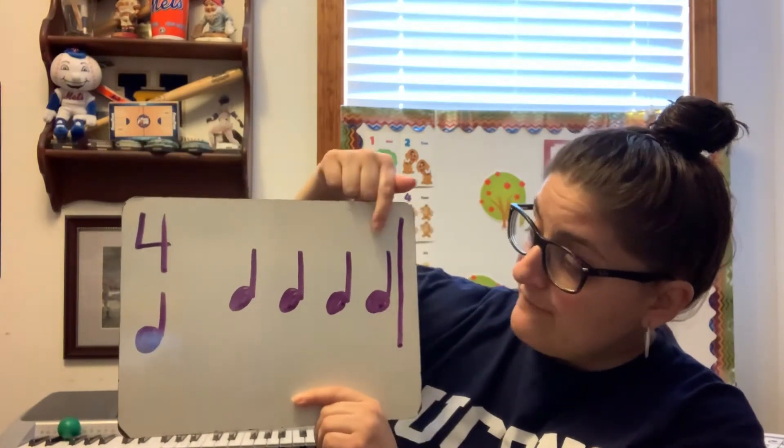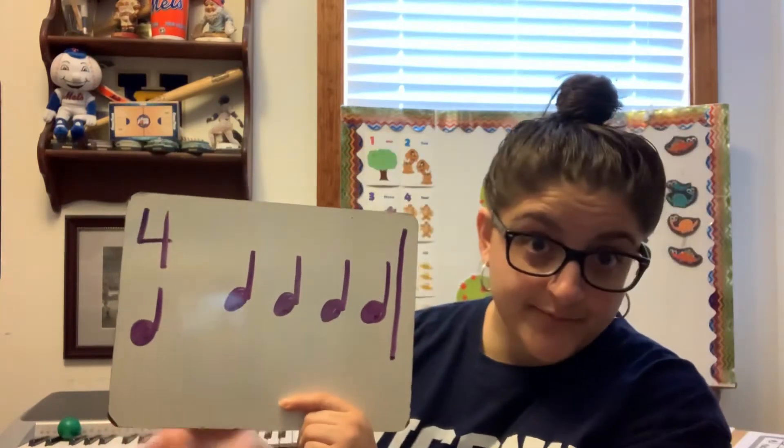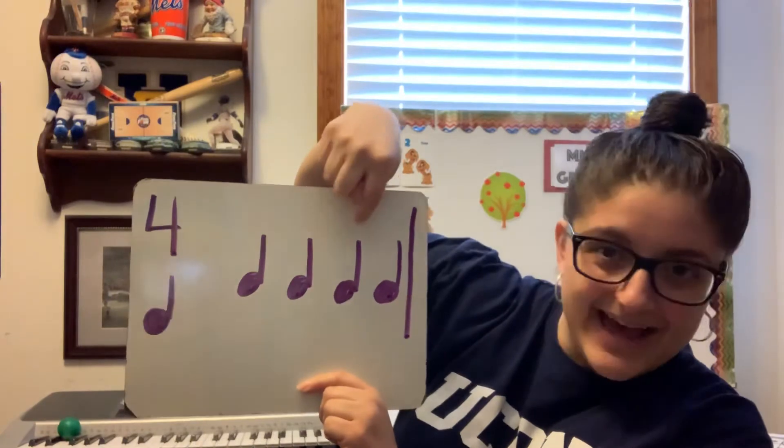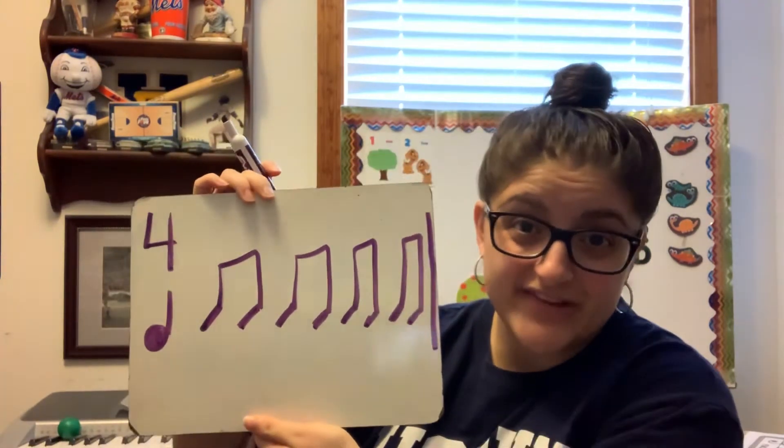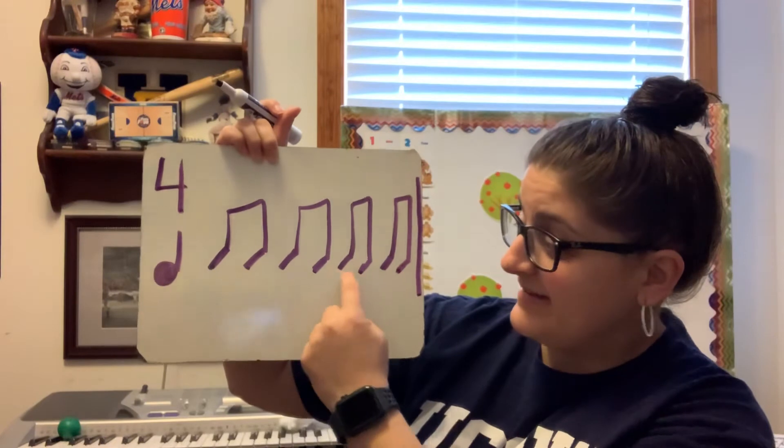So if I have four quarter notes and I'm in kindergarten, I probably read it as ta, ta, ta, ta. If I have something different, we're going to draw a new rhythm on our whiteboard. So remember that I said that ti-ti still gets a beat. So now I still have four beats, it just sounds different and looks different. If you're in first grade or kindergarten, you probably know it as ti-ti, ti-ti, ti-ti, ti-ti.